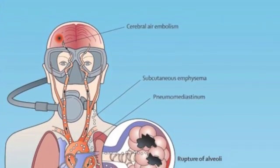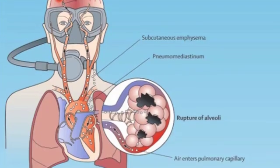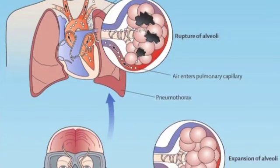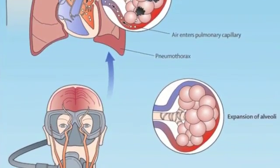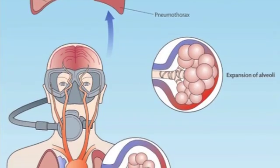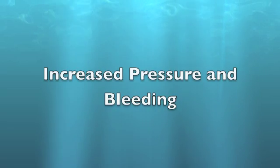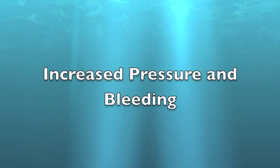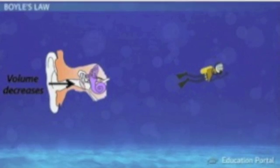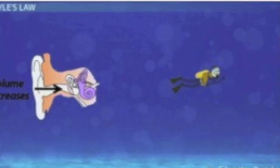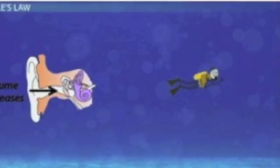Other health consequences caused by ignoring these crucial rules include barotrauma, which is tissue damage resulting from gas volume changes in a closed space. This can affect your sinus, face mask, gastrointestines, and external ear. Increased pressure upon descent can cause bleeding in the ears and sinuses, as well as on the skin of the face due to mask squeeze. These injuries are a result of compressing gases, as stated by Boyle's Law.